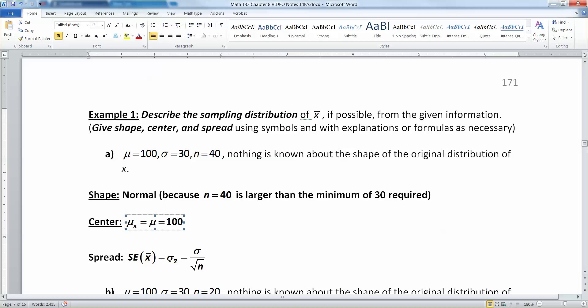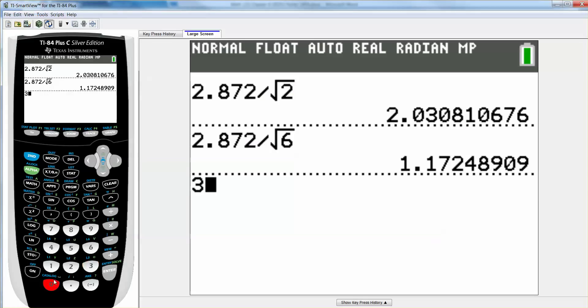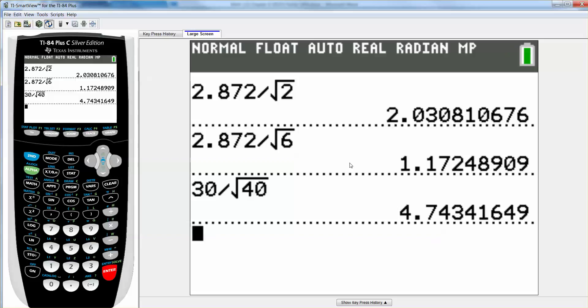The standard error, not the standard deviation, standard error. Standard error is talking about the error from sample to sample to sample. That is the standard deviation, which was 30, divided by the square root of your sample size, which is 40. If you want a decimal approximation, 30 divided by the square root of 40 will be about 4.7434.